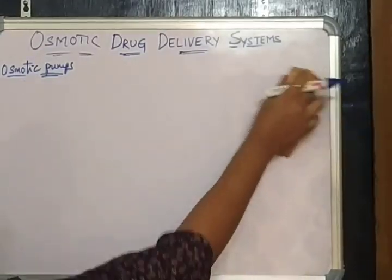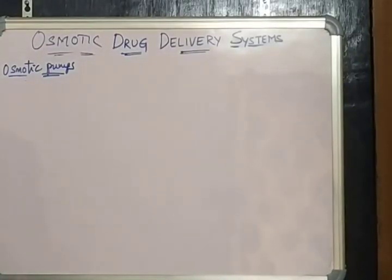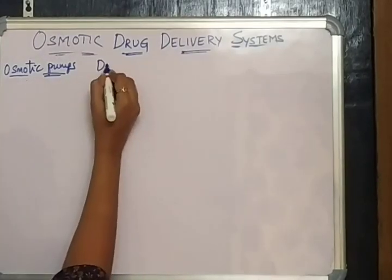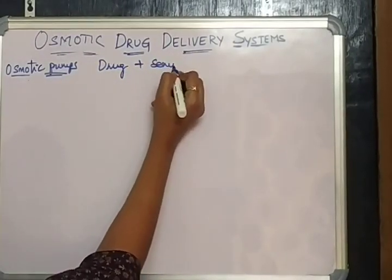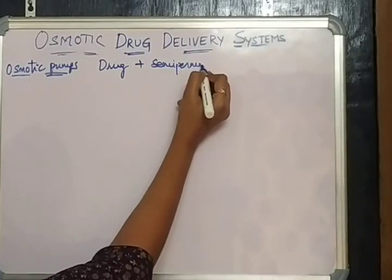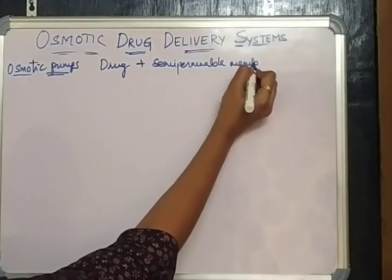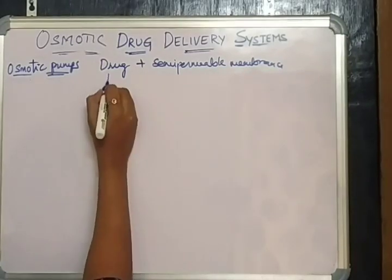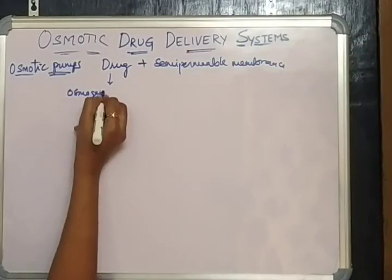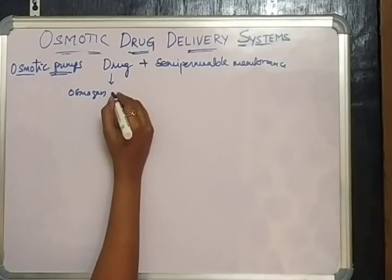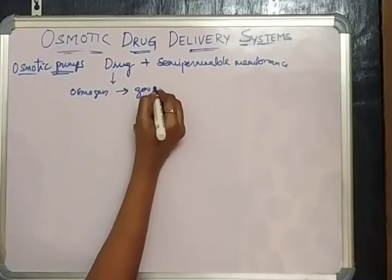Let us see the manufacturing of these osmotic pumps. This osmotic pump consists of a drug plus semi-permeable membrane. In some cases, the drug itself acts as an osmogen — in those cases it shows good aqueous solubility.